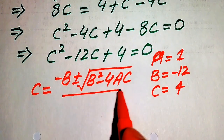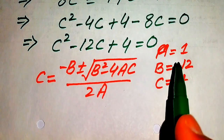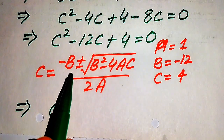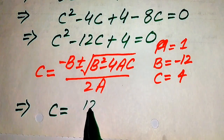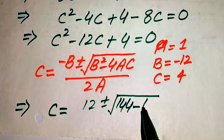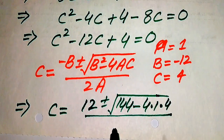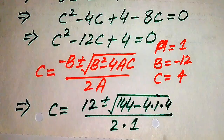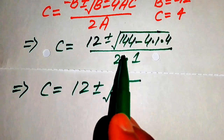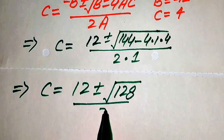The quadratic formula states: C equals minus B plus or minus square root of (B² minus 4AC), divided by 2A. Substituting: minus B becomes minus(minus 12) which is plus 12, and B² equals 12² equals 144, minus 4 times A times C equals 4 times 1 times 4 equals 16, so 144 minus 16 equals 128, divided by 2 times A equals 2.